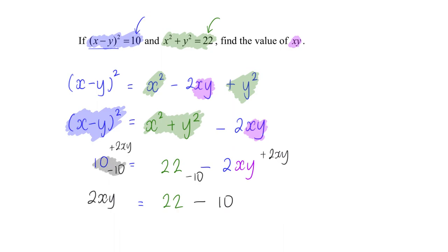This will become zero, this will also become zero. That's why this is what you eventually see, so 2xy will eventually equal 12.